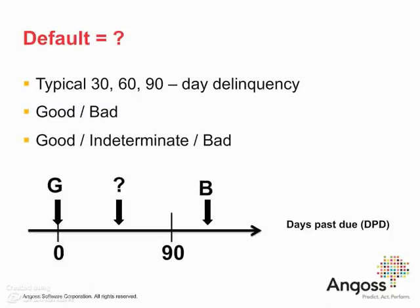We now come to the definition of default. When we say a customer will go delinquent or default, it means there is non-payment over a certain number of days. For example, if a customer stopped paying for 30, 90, or more days — a specific threshold — this is what we call default. Typically, 60-day or 90-day delinquency is used: once a customer exceeds this value, the account is classified as bad. If below that threshold, the customer is good — up to date and meeting their obligations.